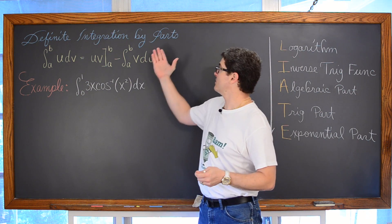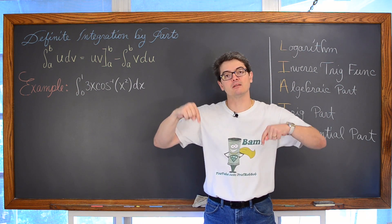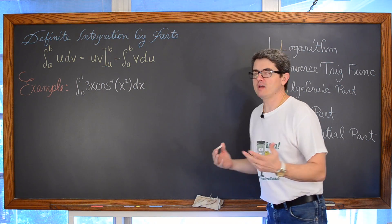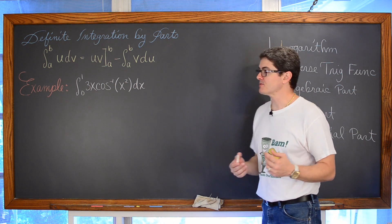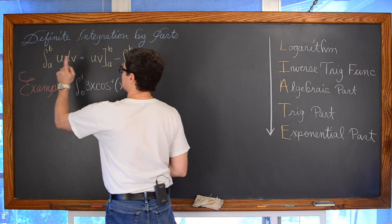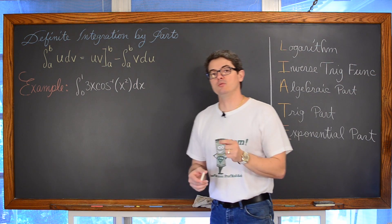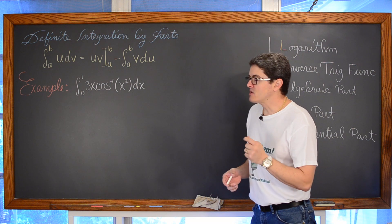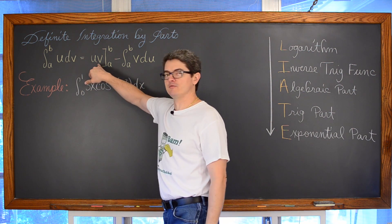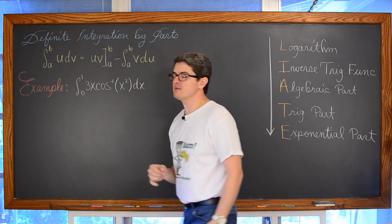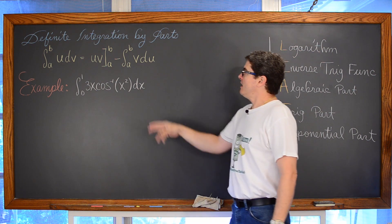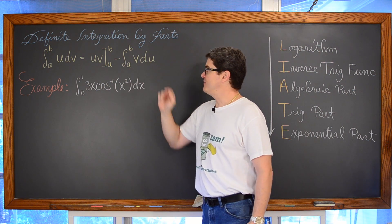In my full length lesson where I introduced this concept — the link to that lesson is in the description of this video — everything was in indefinite integrals. So if you happen upon your homework, the definite integral from a to b of u dv is going to be equal to the product u·v evaluated at the limits a and b, minus the definite integral from a to b of v du.